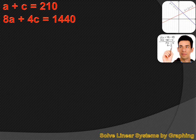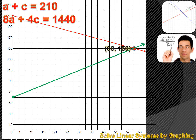Now that we've got a system of equations, we're going to need to solve it, and there are three ways to solve a system of equations. In the last lesson, we covered the first way, which is to graph each of the two equations — where they cross is the solution. If we were to graph these two equations, they cross at 60, 150, telling us that they sold 150 adult tickets and 60 children's tickets.